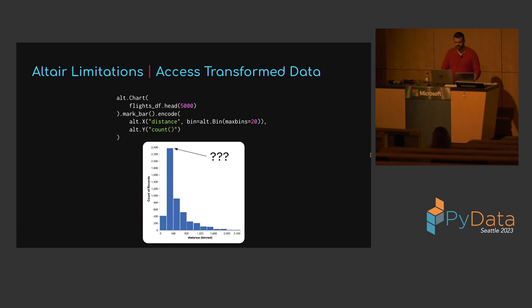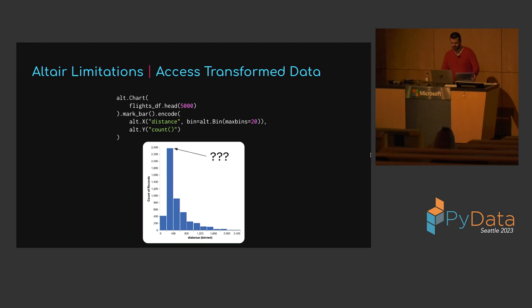Here's another limitation. Going back to the example with only 5,000 rows — exactly how many flights are there between 200 and 400 miles? From the chart we can see it's a little bit less than 2,400, but there's no way to extract this exact number from the chart to use in downstream processing in Python. Again, the reason is that Altair is performing these data transformations in the browser, and so the results are not readily available in Python.